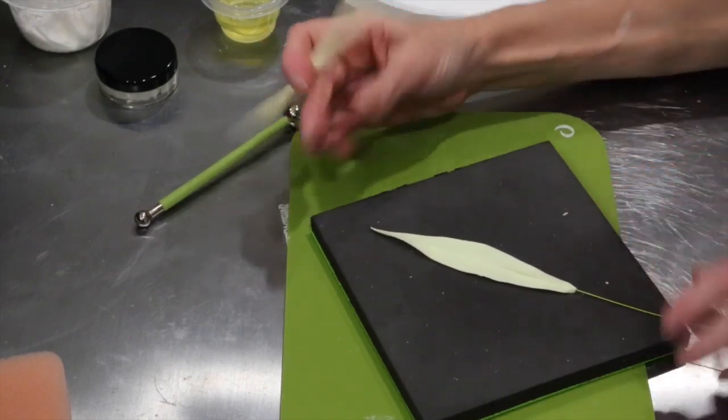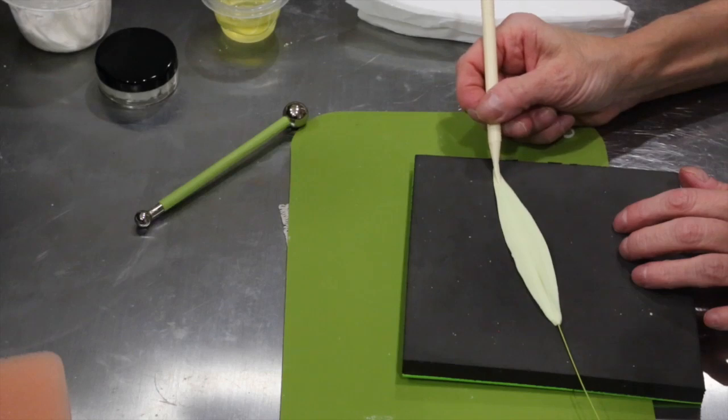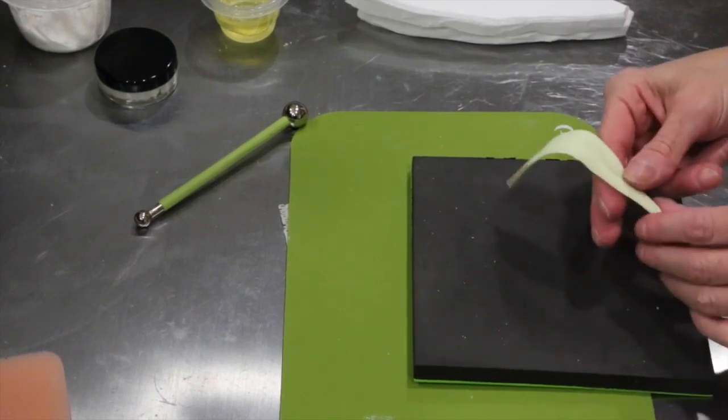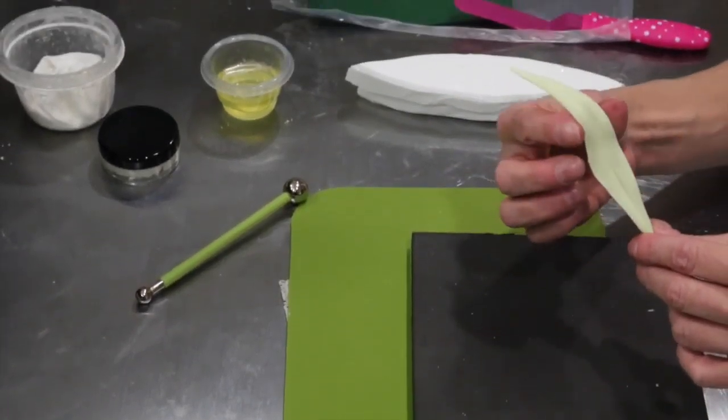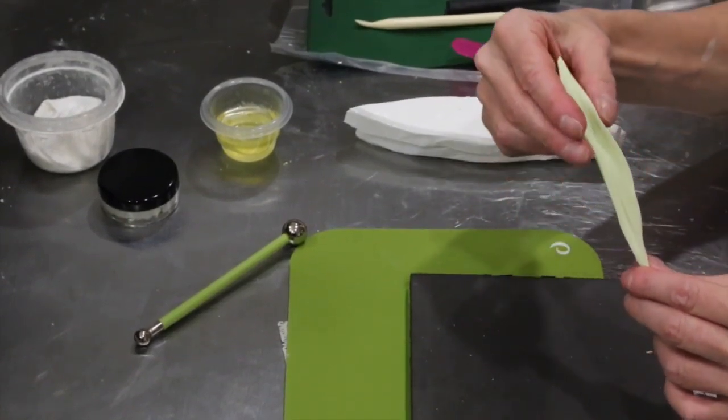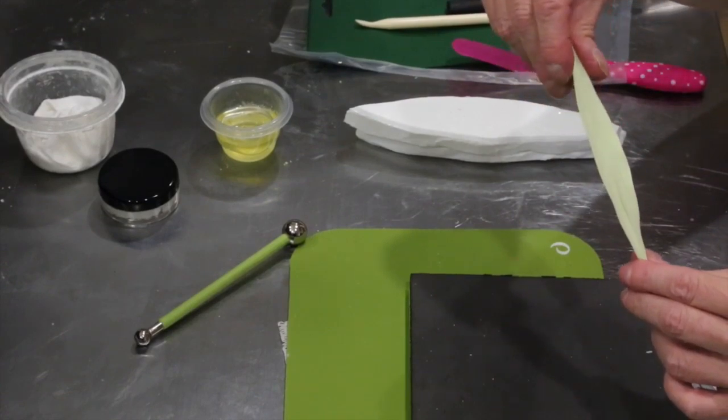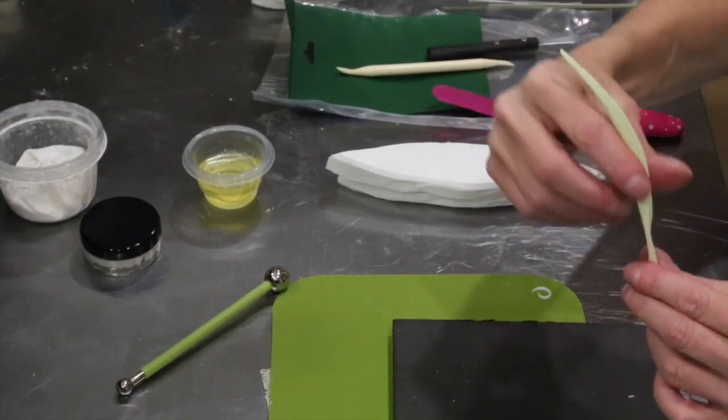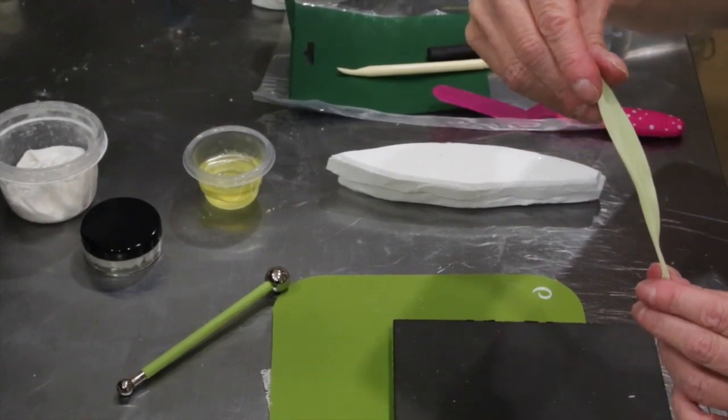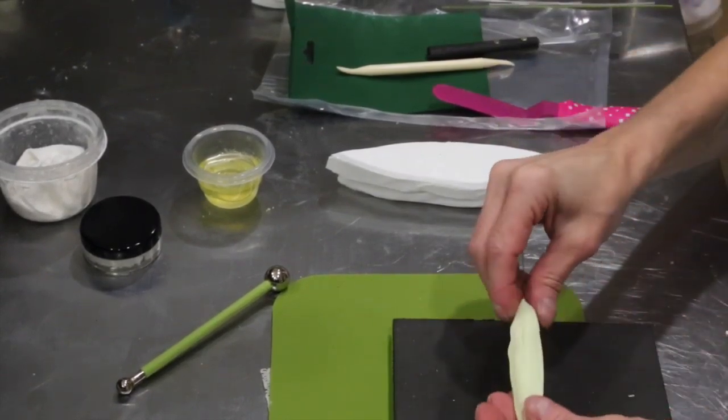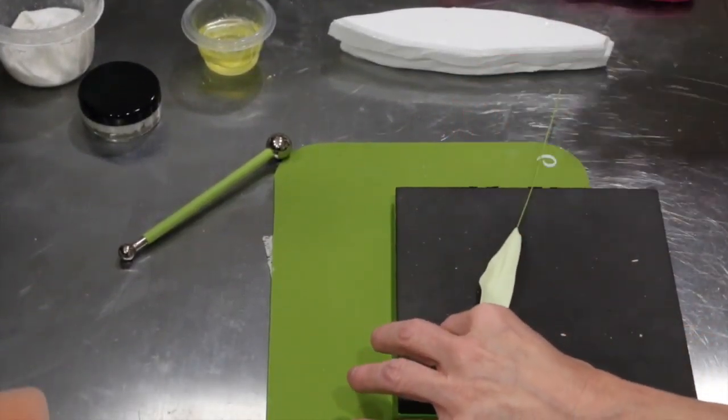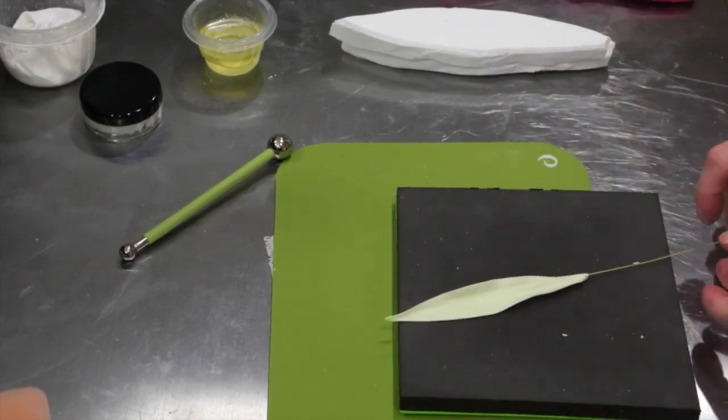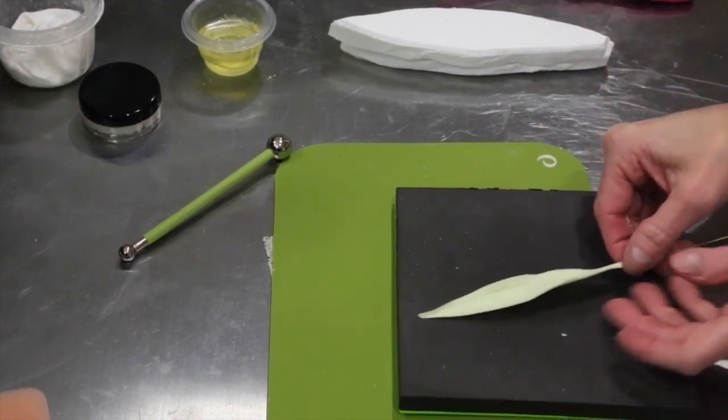I want to bring this top right here in a little bit tighter. So I am going to use my dresden tool on the small side to do so. And now I will pinch from the bottom to the top creating my central vein and bringing that in. At this point I can either, depending on how I decide I want this leaf to look, lay it on a dimple foam or you can lay it on a leaf mat. I am going to lay it on the dimple foam.